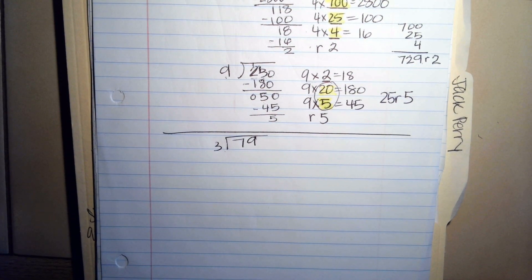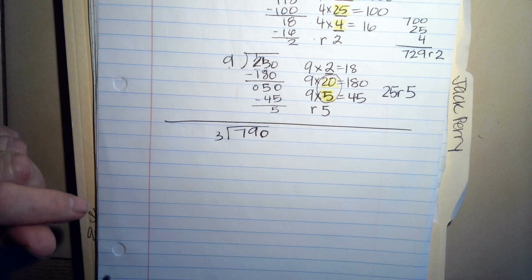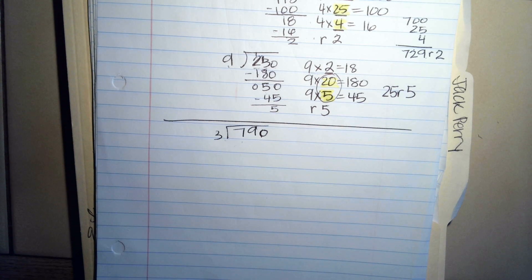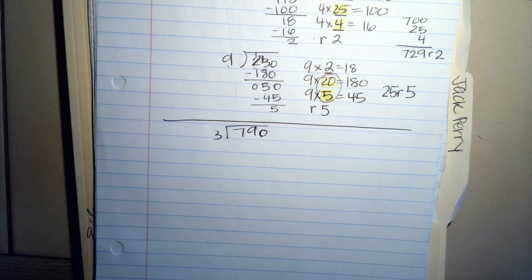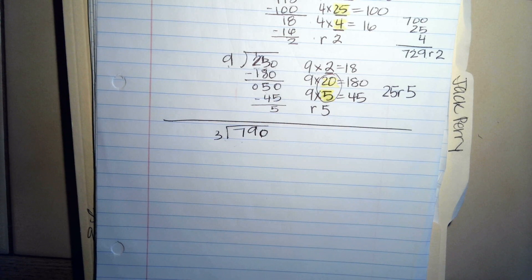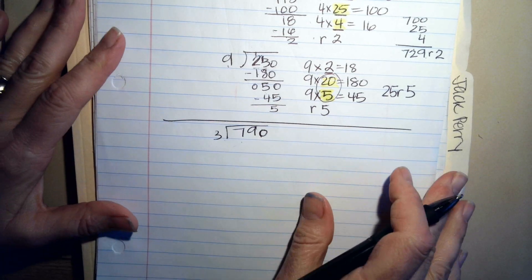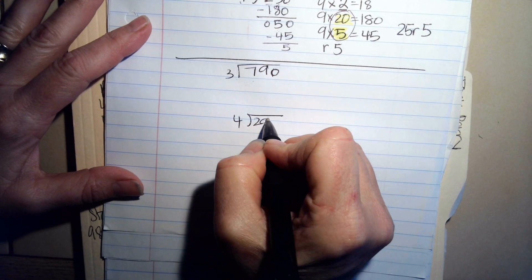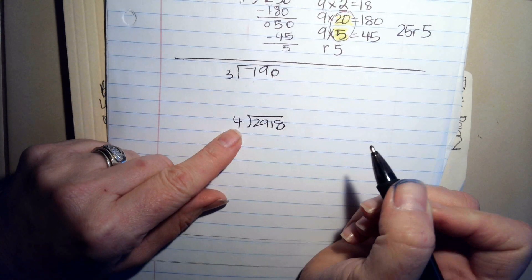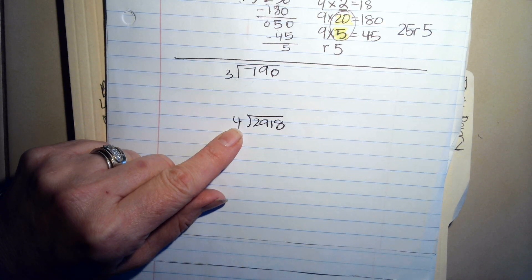How about if you do it with this? 3 goes into 790. I want you to write it down and tell me what you would do step by step. In the meantime, I'm going to show you another way to do this. So this one is not a partial product. This is just a multi-digit division.